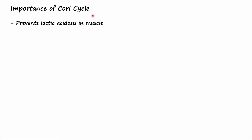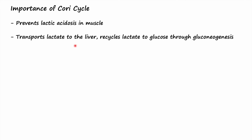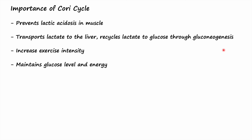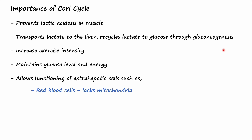The importance of the Cori cycle: first, it prevents lactic acidosis in muscle by removing lactate and hydrogen ions from skeletal muscle. Second, it transports lactate to the liver where it is recycled into glucose through gluconeogenesis — remember, this must happen in the liver because glucose-6-phosphatase is absent in skeletal muscle. Third, it maintains glucose levels and energy by recycling lactate into glucose, and it supports extra-hepatic cells such as red blood cells which lack mitochondria and totally rely on glycolysis.